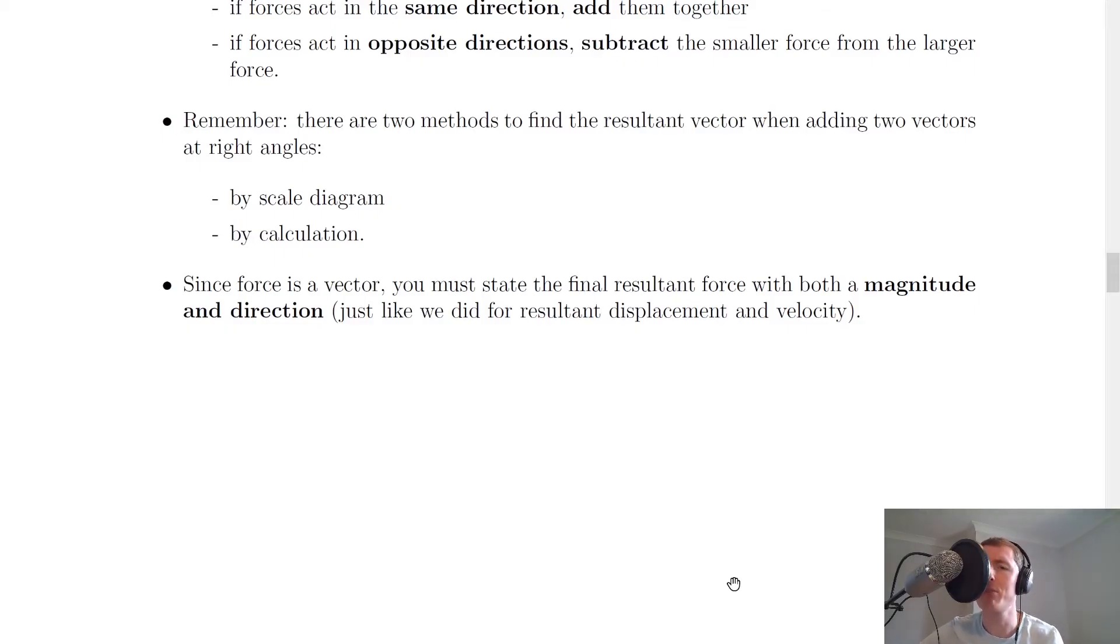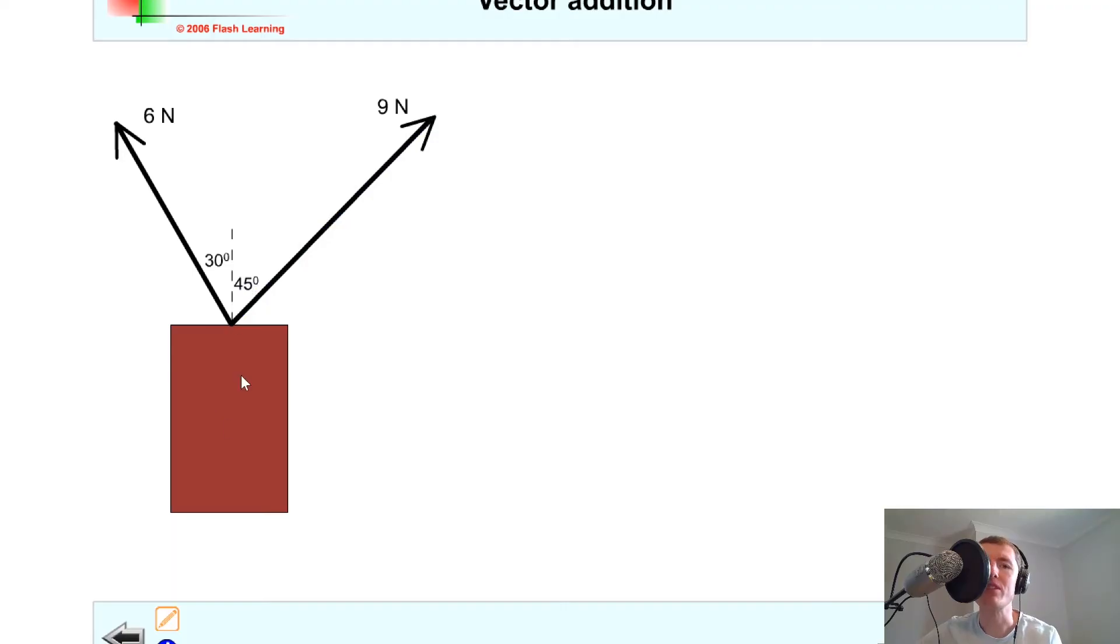Just to show you an example, imagine we've got an object here and we've got a force of 6 newtons acting at an angle of 30 degrees from the vertical, and a force of 9 newtons acting at an angle of 45 degrees from the vertical. Then what we need to do is add these two vectors together.